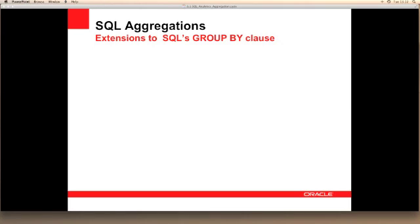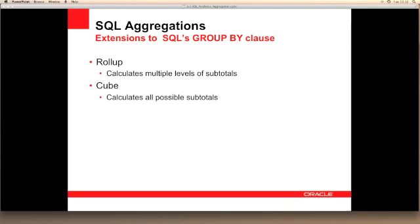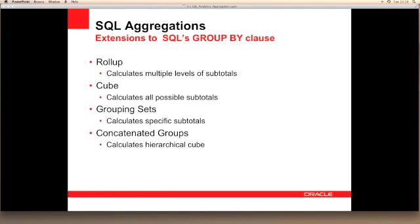The extensions that we're going to look at fall into four categories. Roll-up calculates multiple levels of subtotals for us. Cube calculates all the possible combinations of subtotals. Grouping set allows us to specify which subtotals are going to be computed. Finally, concatenated groups allows us to calculate a hierarchical cube.